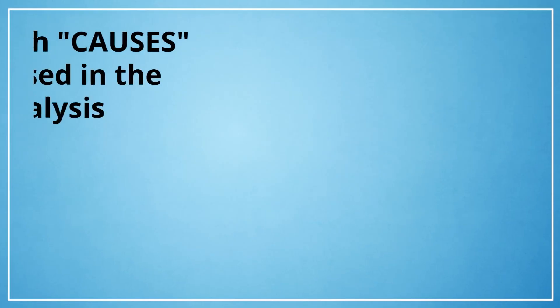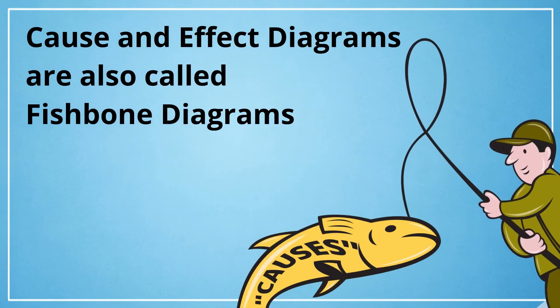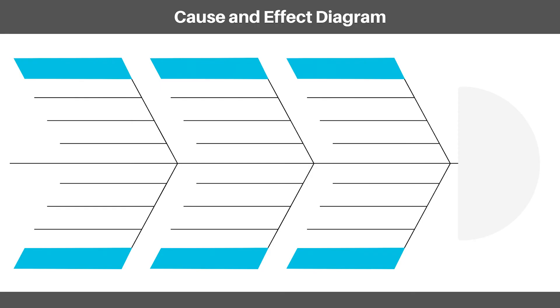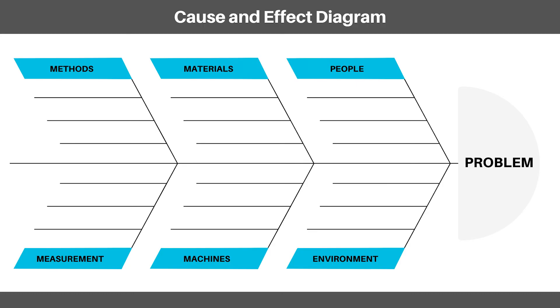The other way to analyze root causes is with a cause and effect diagram. These were developed in the 1940s to understand problems by explaining how a complex set of factors could be related. They have standard categories, and the advantage is that by reviewing each category, you are likely to catch causes you missed in the current state analysis. Cause and effect diagrams are also called fishbone diagrams because they look like fish. To create one, first put the problem in the fish's mouth — this is the effect. Next, list the categories as the fish bones.